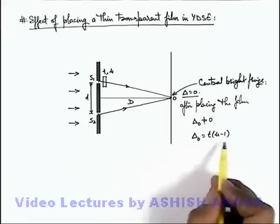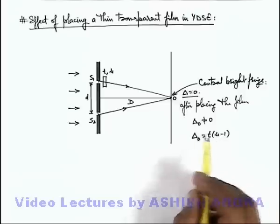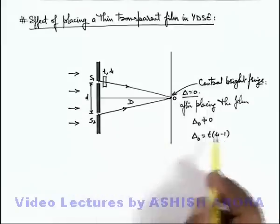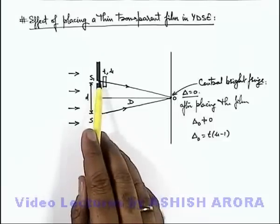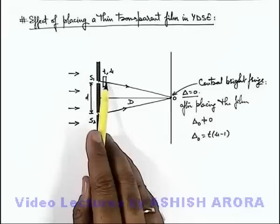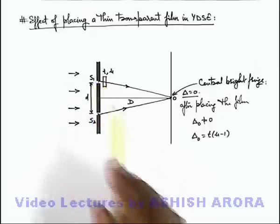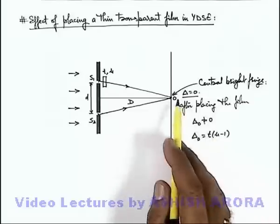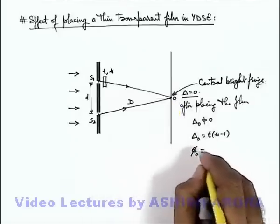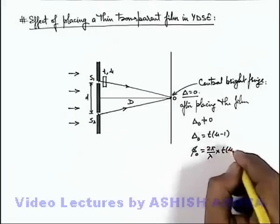As we have already discussed, the optical path difference introduced due to the travel of a light wave in a denser medium is given as tμ, because light from S2 is travelling a distance t, while the light from S1 passing through the transparent medium is travelling an equivalent path in air of μt. So the difference will be t multiplied by (μ − 1).